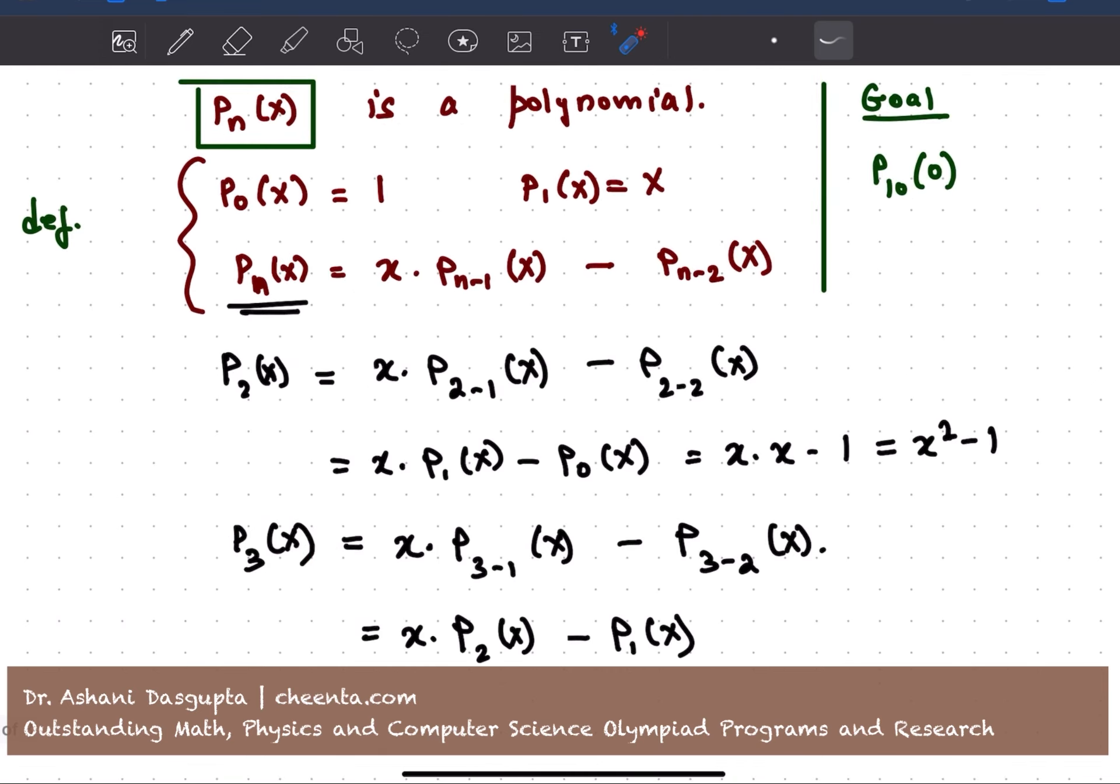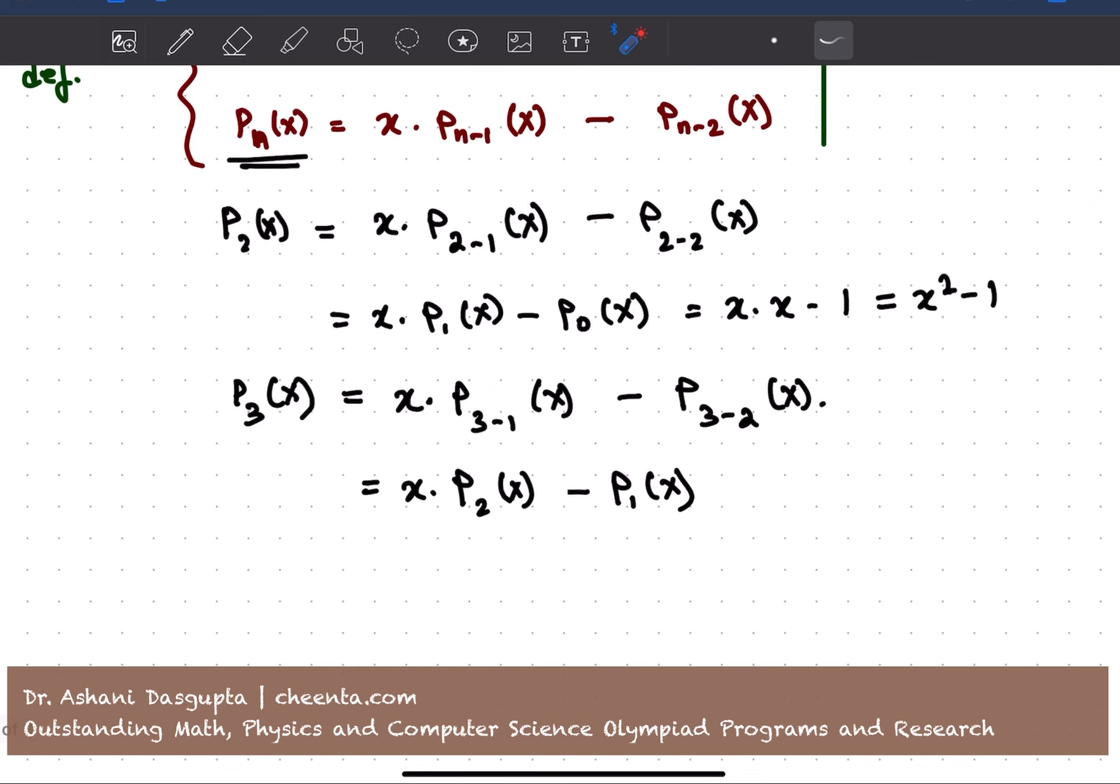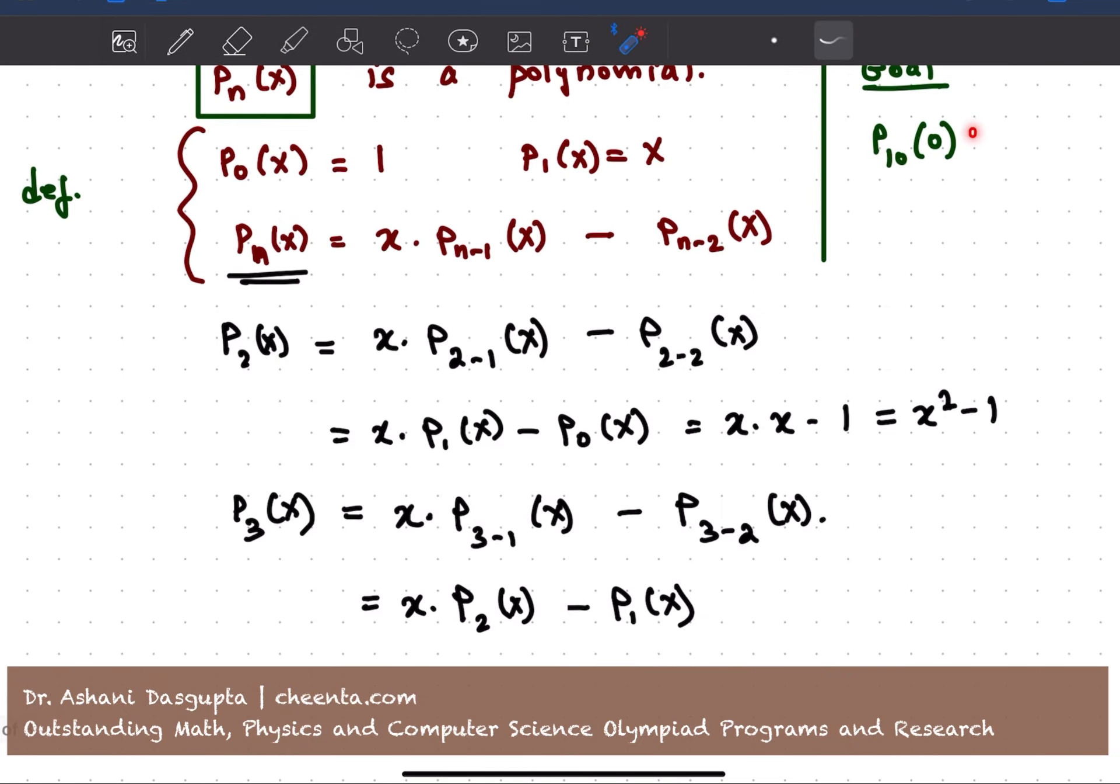Okay, so let's come back to the problem. We want to find out P_10 of 0. Now, of course, one thing we can do is continuously compute P_3(x), P_4(x), P_5(x) like this. If we go up to P_10(x) and then plug x equal to 0 here, then of course, we will get the value that we want. But that's a very long drawn method. So we are not going to use that. We will observe something else.